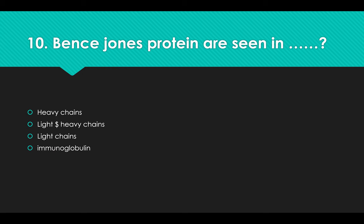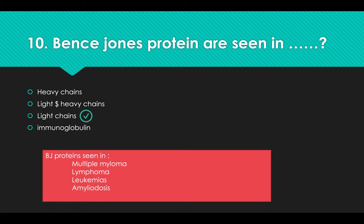Bence-Jones proteins are seen in: Options: A) Heavy chains, B) Light and heavy chains, C) Light chains, D) Immunoglobulin. Answer: Option C, Light chains. Bence-Jones protein is also seen in Multiple Myeloma, Lymphoma, Leukemias, and Amyloidosis.